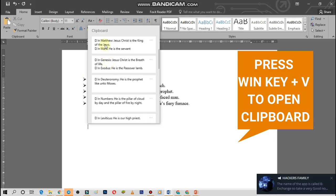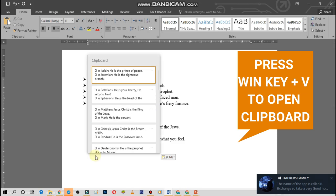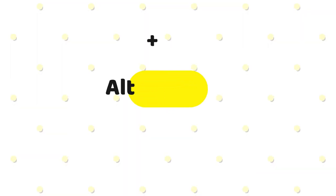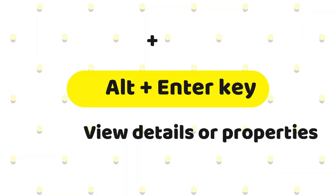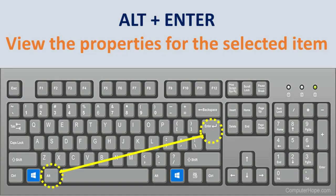To make an example, you can see this feature on your screen. Alt plus Enter — view details or properties. This combination allows you to open the details or properties of a selected file, folder, or any application.